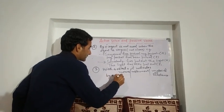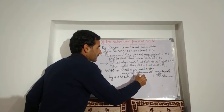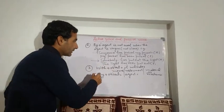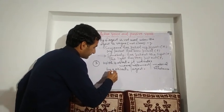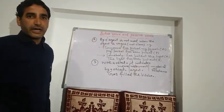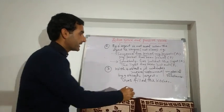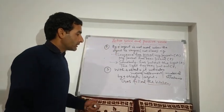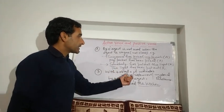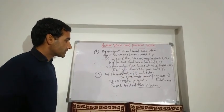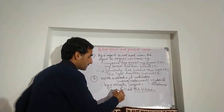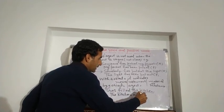'By + object' indicates agent, as we have seen in earlier examples. But 'with + object' indicates means or instrument. For example, 'Gas filled the kitchen' is in active voice. When I change this into passive voice I should write 'The kitchen was filled with gas.' 'By gas' is not possible here — that is why we use 'with.' So: 'Gas filled the kitchen' becomes 'The kitchen was filled with gas.'